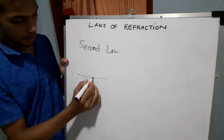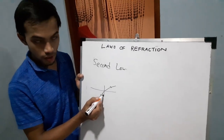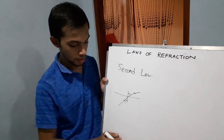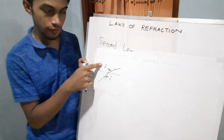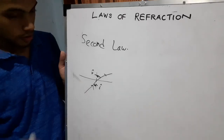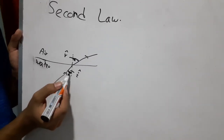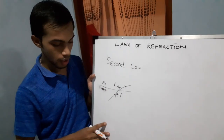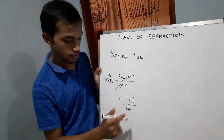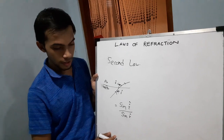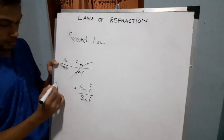The second law of refraction states that when a light ray moves to an interface and refracts, it always forms two angles — the incident angle and the refracted angle. If this is the normal, the ratio of the sine of the incident angle to the sine of the angle of refraction is a constant for any two given media. This constant is called the index of refraction.